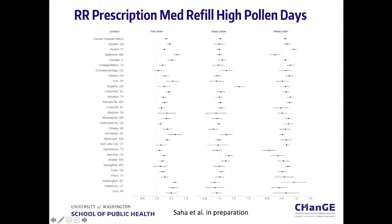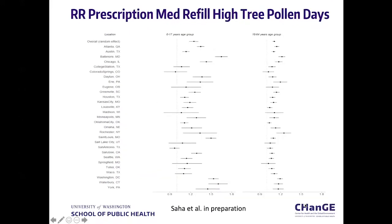Looking overall at trees, grass, and weeds, trees seem to be the most problematic exposure in the cities that we examined. We see a relative risk on high pollen days of prescription medication refills of roughly about 20 to 30 percent over the baseline. If you look at trees specifically and at kids, who we know are the most sensitive, you see a more substantial relationship — roughly a 50 percent increase on high tree pollen days. So we know that trees and kids are probably the exposures and the populations that we're particularly interested in here.